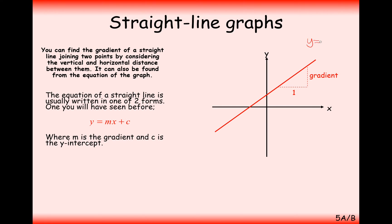For example, if we were looking at y equals 3x plus 5, for every time we increase our x-coordinate by 1, we would increase the y-coordinate by 3. If our graph was downward sloping, our gradient would be a negative value — for example, the line y equals minus 3x minus 2.